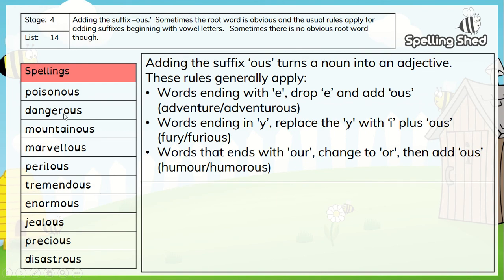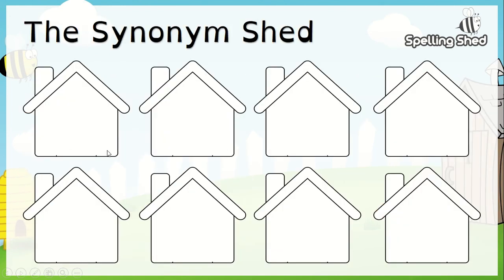I'd like you to have a go at trying to do all of them, but I'm going to say at least five. Pick at least five of your spellings and try and find synonyms for them. I've got a sheet here which I'm going to upload on the class portfolio page. You can write on those if you like, or you could just draw your own sheds, and take a picture. Write the spelling on the top and then try and think of some synonyms — words that mean the same or are similar — to put inside each shed.